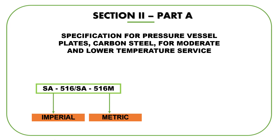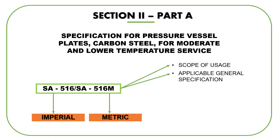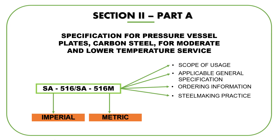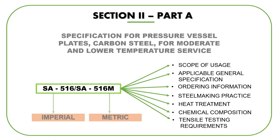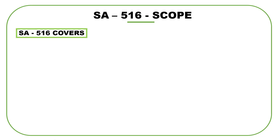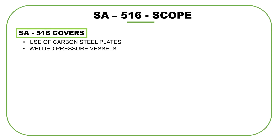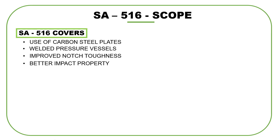What else are we going to find in this specification? We will find about the scope of usage, the applicable general specification — every material refers to a general specification which covers lots of general requirements — ordering information required, specifics about the steelmaking practice, types of heat treatment recommended, details of the material's chemical composition, and tensile testing requirements. Now let's take a closer look at each of these. The key point mentioned in the scope is that SA 516 covers the use of carbon steel plates for welded pressure vessels where improved notch toughness is needed, which means better impact property is required.